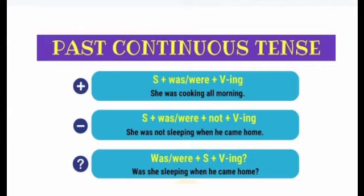اب اس کی examples دیکھ لیتے ہیں۔ Positive: She was cooking all morning. یہ simple positive sentence ہے۔ Negative: She was not cooking all morning. Interrogative: Was she cooking all morning?